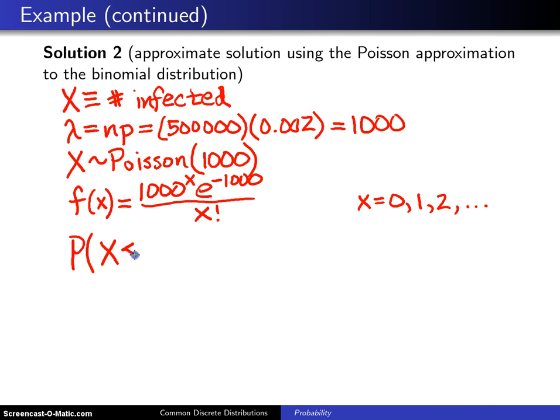The probability that X is less than or equal to 1,040 will be approximately, and I put the approximately in here because we are using the Poisson approximation. It will be the sum from X equals 0 to 1040 just like before, but instead of putting in the binomial probability mass function,